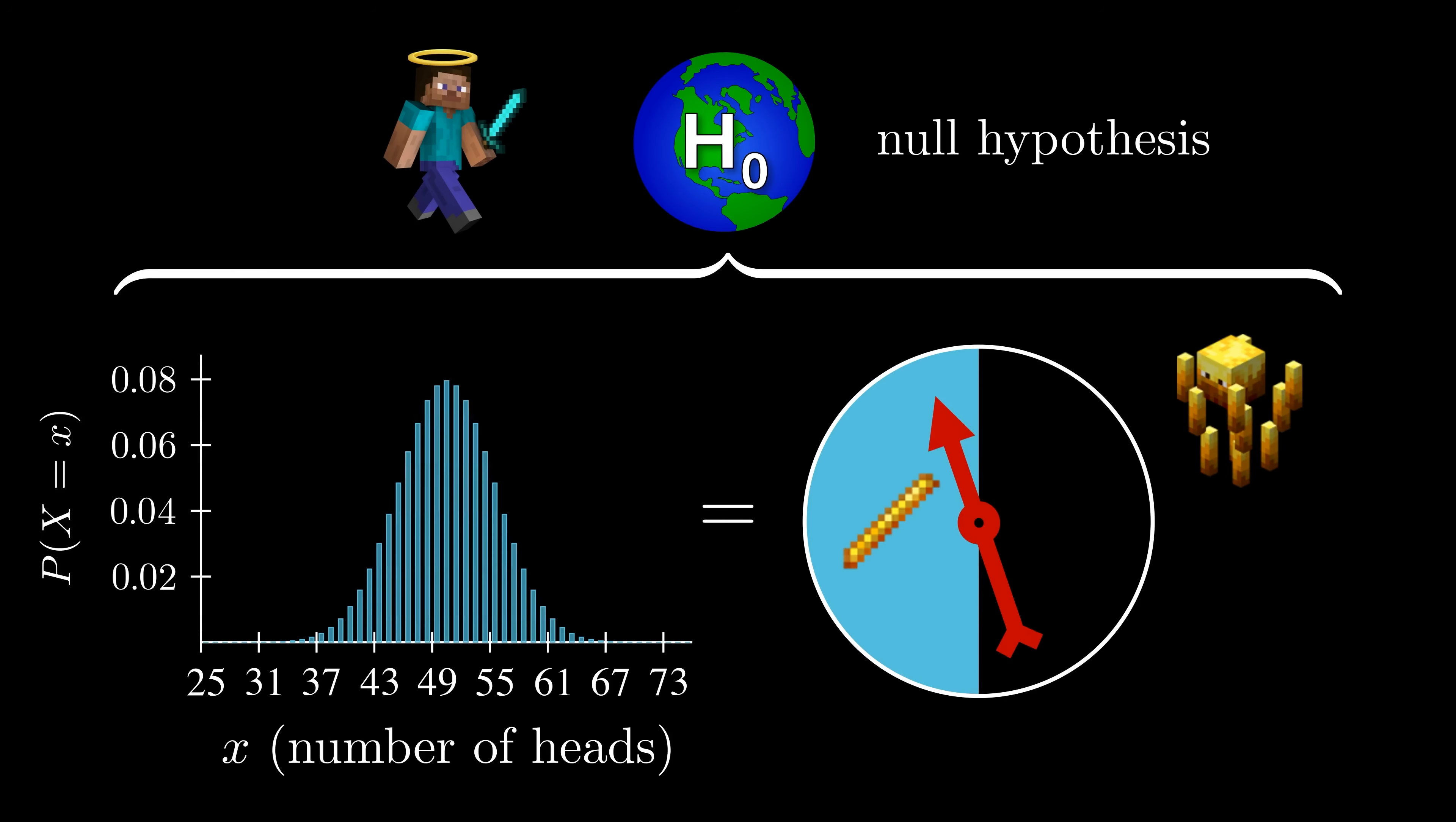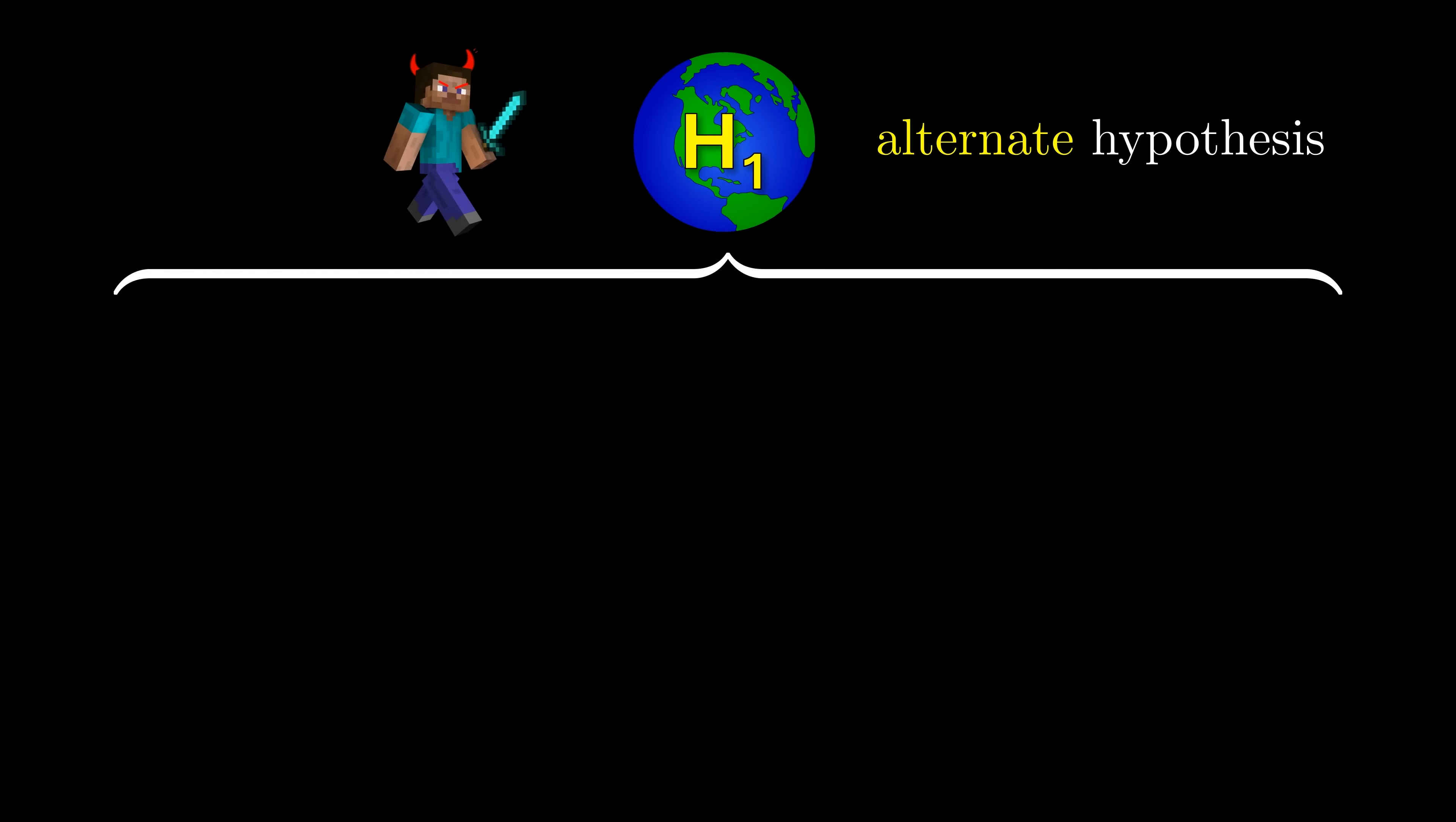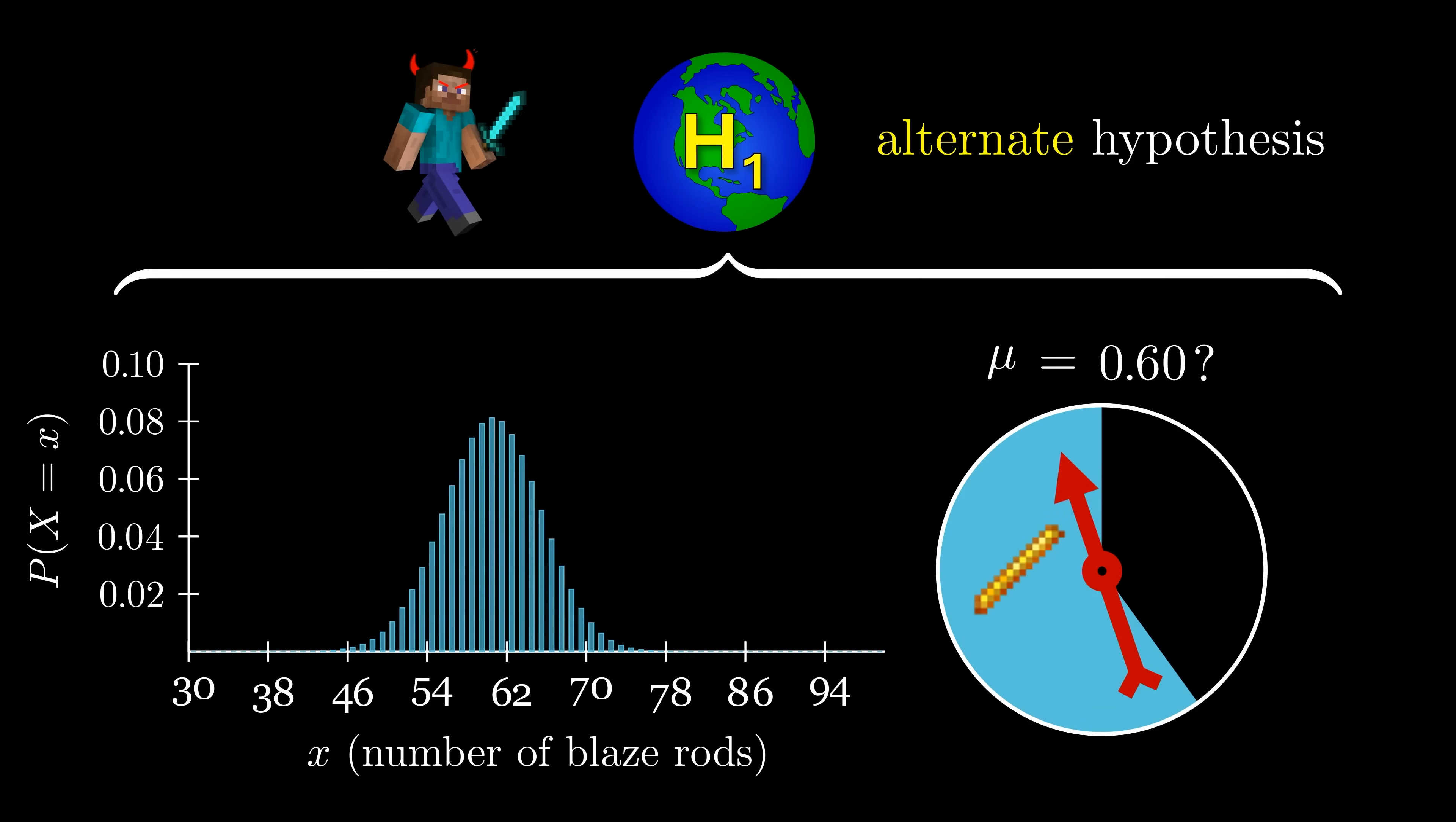It's important to keep in mind that this distribution only applies if we live in the null world, the world where no cheating occurred. Why is this? Remember that in the alternative world, our friend cheated to make the probability mu greater, so this distribution would look different.